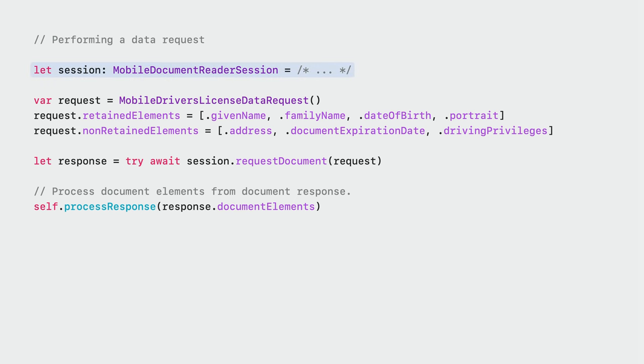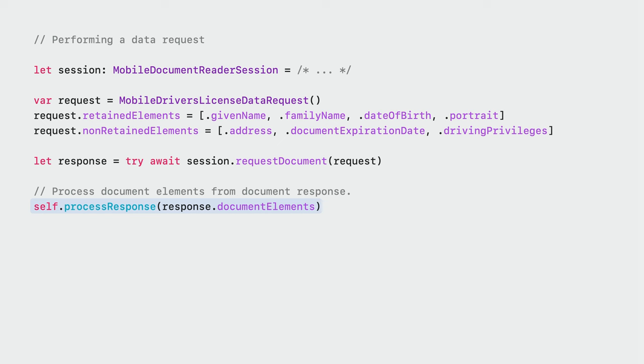And that covers the display request. So far, we've looked at how to prepare a session, request a document, and how to use a reader token to show your branding information. Now let's look at how to perform a data request. These requests support a wider range of document elements and the API returns the result to your app instead of just displaying it. To use this request type, you'll first need to prepare your device with a reader token just like before. Then, create a driver's license data request, specifying the document elements to be requested and whether you intend to retain the information. Calling requestDocument will show the reader UI just like with the display request, but once the read has completed, the UI is automatically dismissed and the response is returned to your app to process. And that's Tap to Present ID on iPhone — an exciting new API we've added to the Proximity Reader framework.